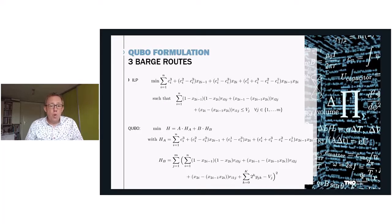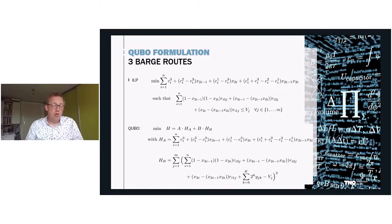This simple model, using just one truck and one barge route, can be expanded to more barge routes. For example, here we have a three-barge-route formulation, where each container has the choice of one truck route and three barge routes, and each barge route consists of a number of specific tracks from the origin to the destination.